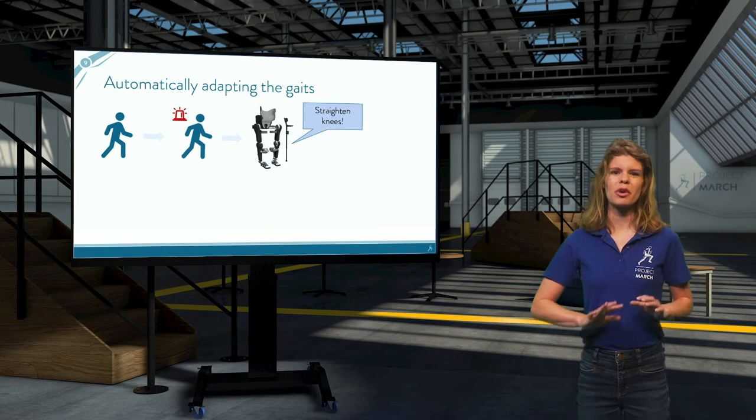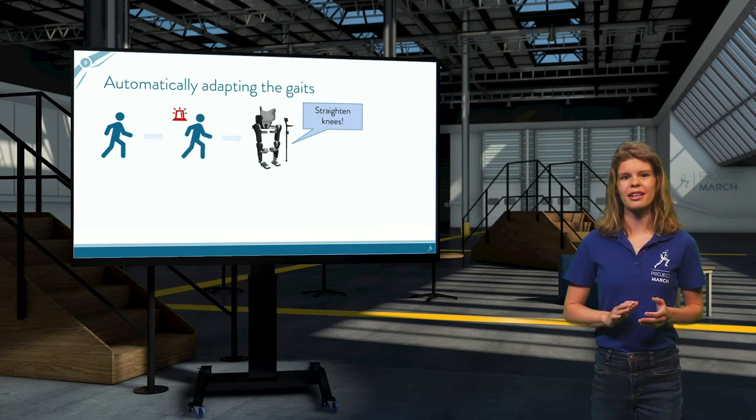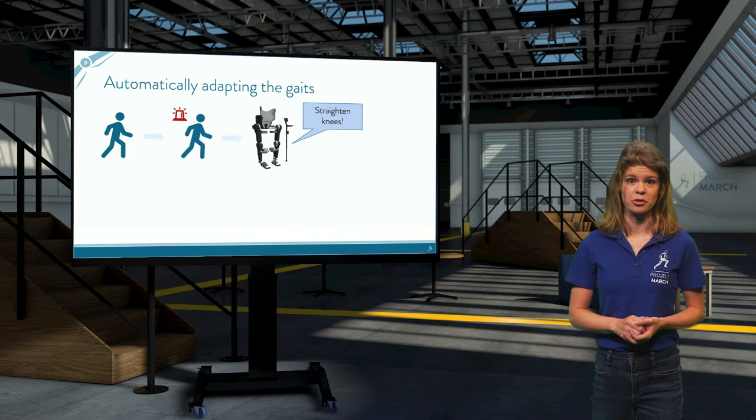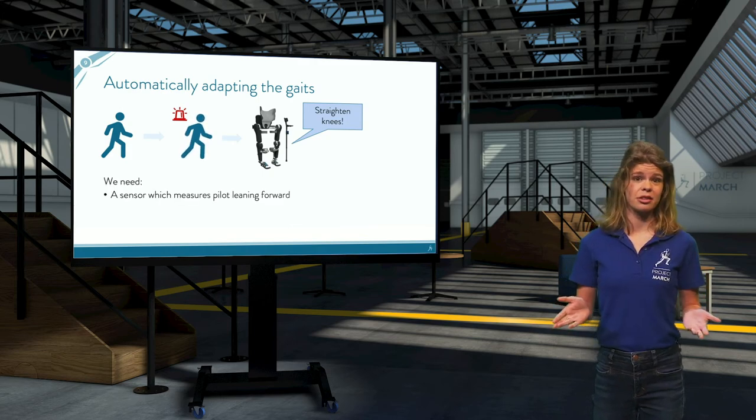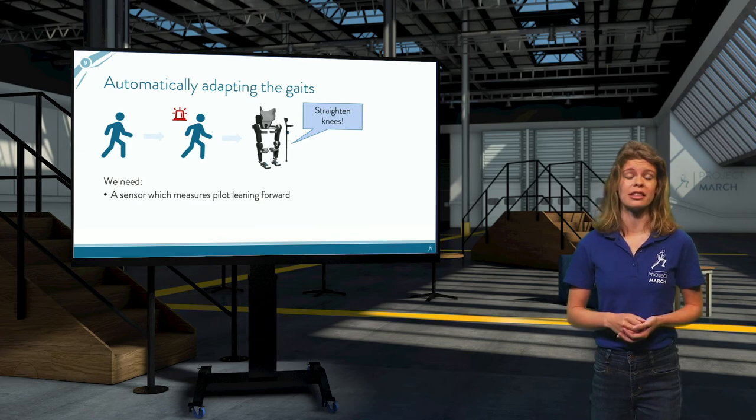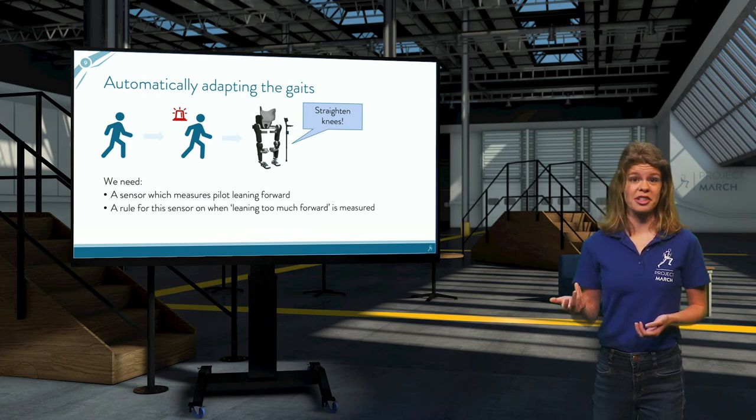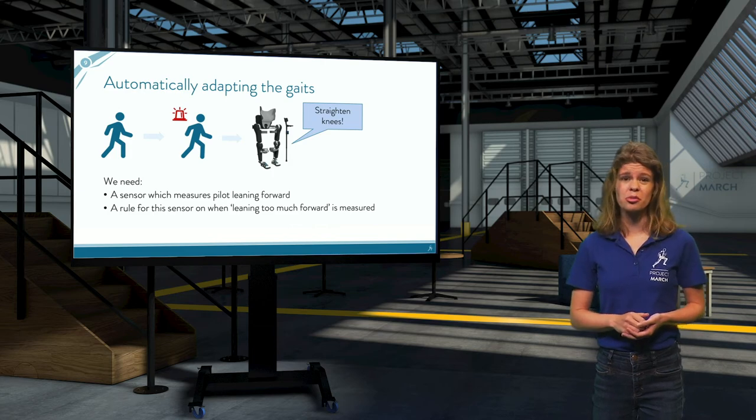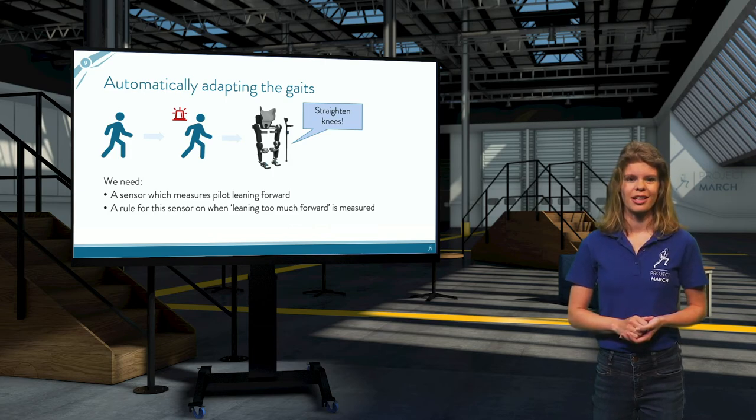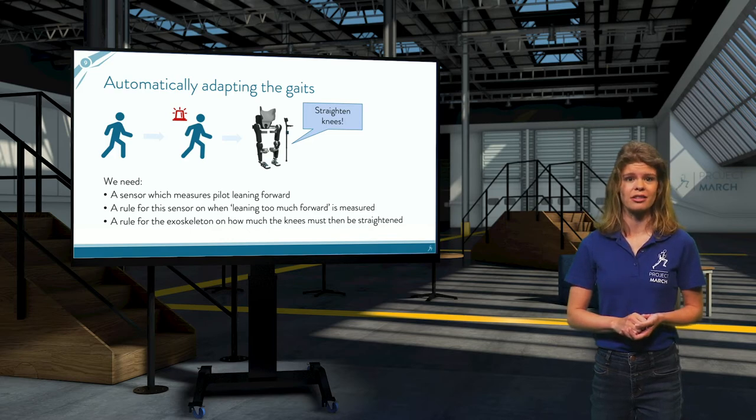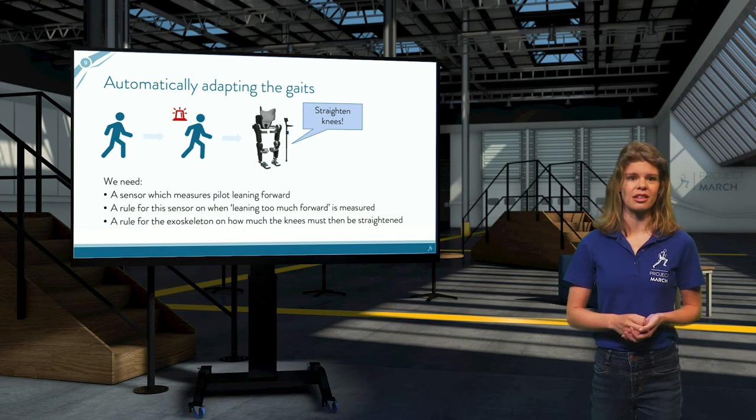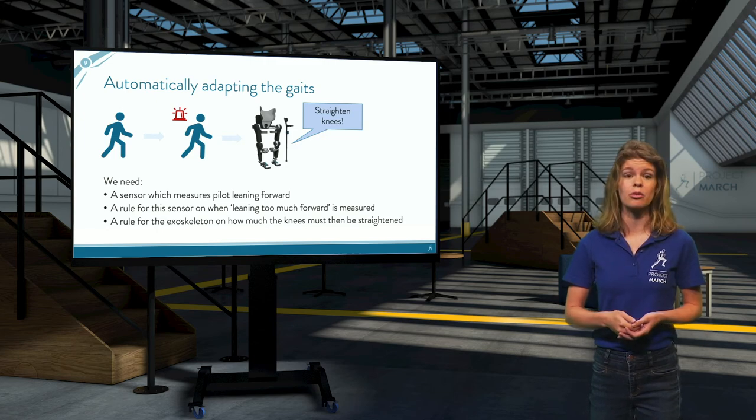For example, say we want our exoskeleton to automatically straighten its knees if the pilot is leaning too much forward. Then we need a sensor which measures how much the pilot is leaning forward, a rule for the sensor on when leaning too much forward is measured, and we need a rule for the exoskeleton on how much the knees must then be straightened. Before we can make these rules, we need to study the correlation between the data from the sensor and to what degree straightening the knees actually works.